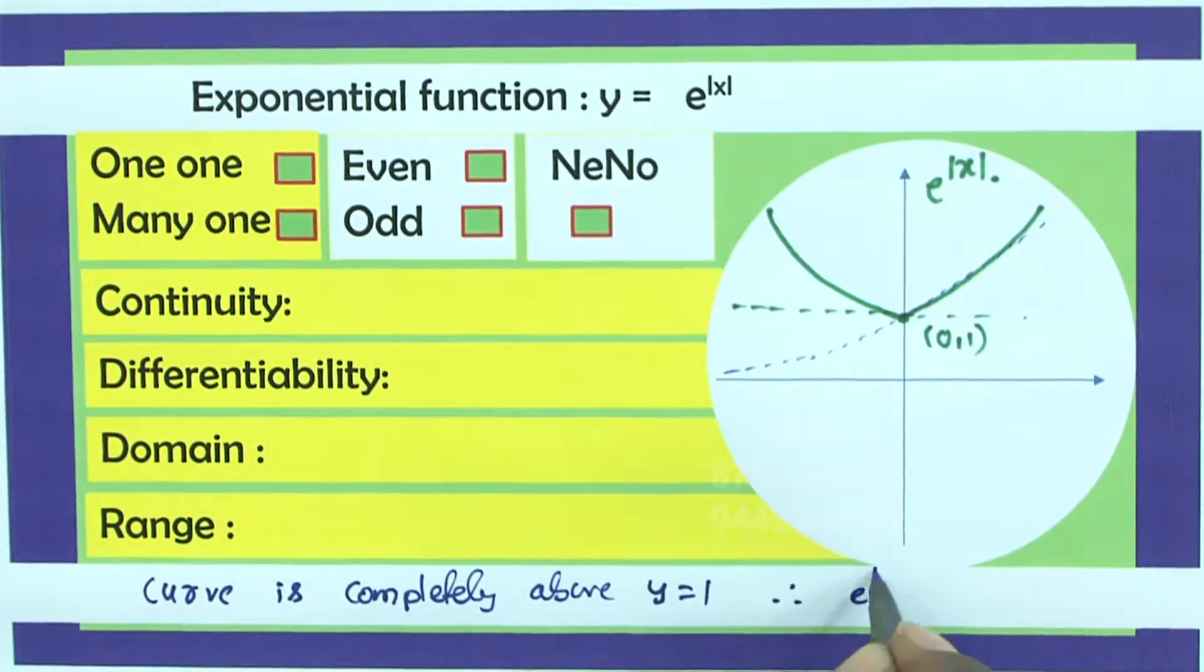This point is 0 comma 1. So above y is equal to 1. Therefore, e power mod x must be greater than or equal to 1. That is an important information here.